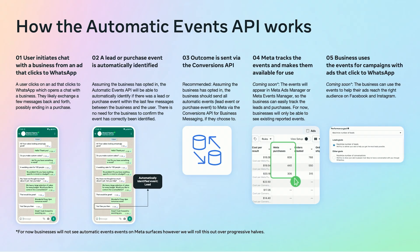Let's take a closer look at how the Automatic Events API works. First, a user initiates a chat from an ad that clicks to WhatsApp. You exchange messages, and our advanced machine learning algorithms automatically identify if there's a lead or purchase event in the conversation. Next, these identified events can be sent to Meta via the existing Conversions API for business messaging. This is considered best practice for ads that click to WhatsApp, and we believe that most businesses will find value in doing this.